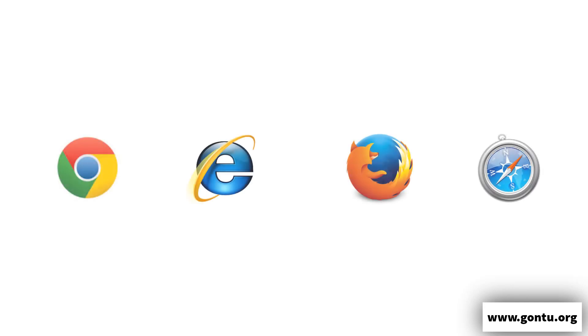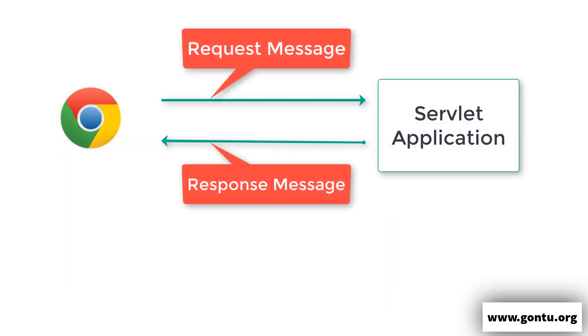When we say we want to develop a servlet application, what do we really mean by that? We mean that we want to create an application which would allow any human being to interact with it through a standard browser like Google Chrome, Internet Explorer, etc. — the way we access Google.com, GON2.org, or any other website. This is the overall workflow we expect our servlet application to follow: a user makes a request via browser, our application processes it with the written logic, and then sends a response message back to the client.